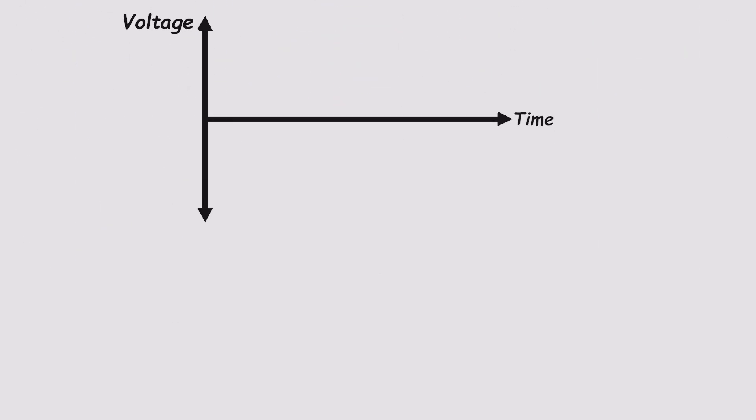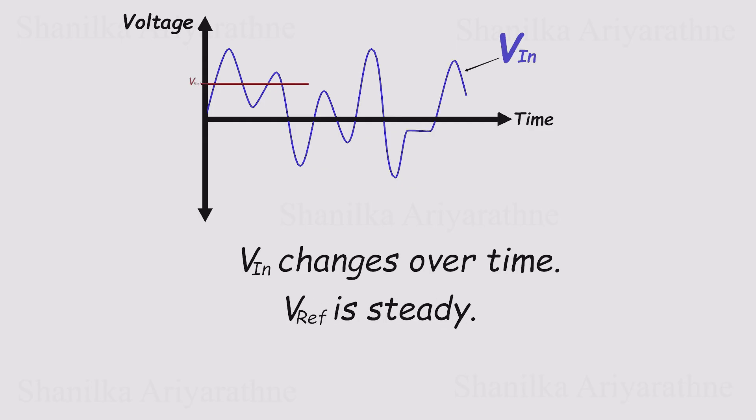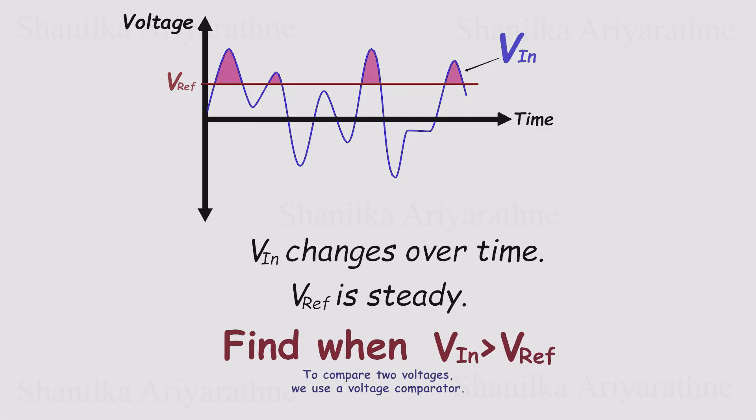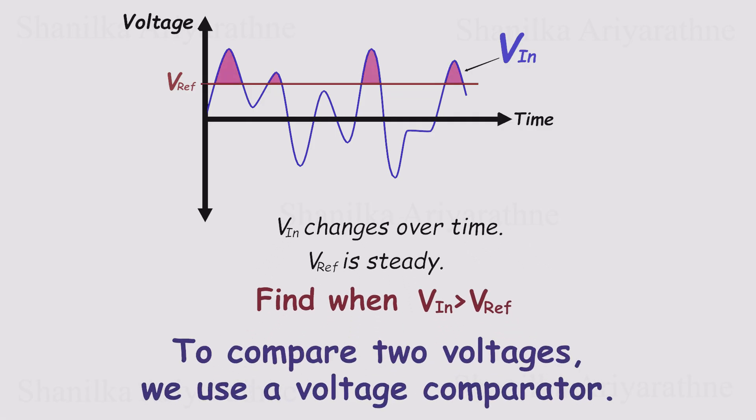Here's the idea. We have two voltages, VIN, which changes over time, and a steady reference voltage. The question is, exactly when does VIN climb above that reference voltage? To find out, we need something that can compare the two.